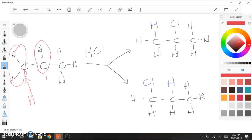And so the major product is formed when the hydrogen atom is added to the carbon with the most hydrogens. So the H is going to come onto here, and the Cl is going to go onto the other side. So this one is our major product, and this one is our minor product.